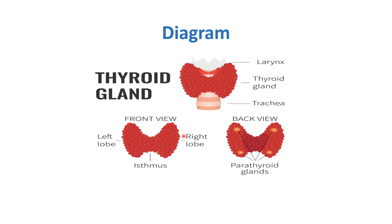Now let's understand the location of the thyroid gland. In the first diagram, we can see the larynx, the thyroid gland, and the trachea. The front view shows the right lobe, left lobe, and the isthmus. The back view shows the parathyroid glands — four small colored structures located on the posterior surface.